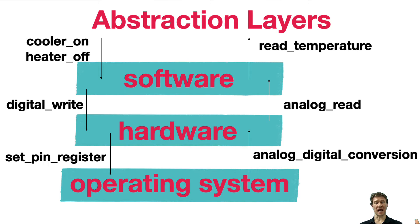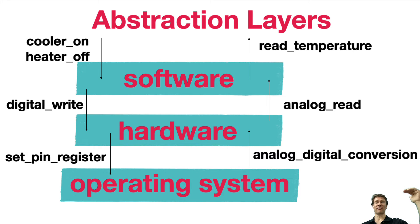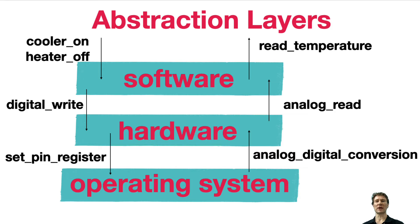Going one step further down, we're looking at interactions between those software functions and the hardware, all the way down to the chip that is reading a string of zeros and ones. On the output side, we're setting a single pin or bit inside our microchip to on or off to send an output to a pin — ultimately turning the heater or cooler on and off. On the other side, the CPU microcontroller reads the analog sensor and uses a binary number to convert that sensor value to zeros and ones.